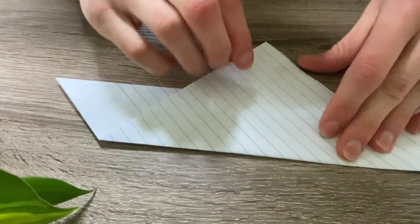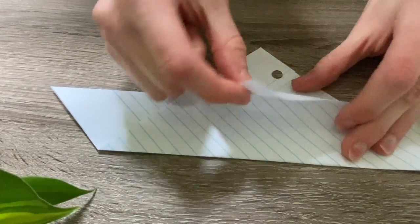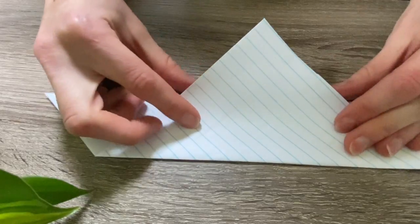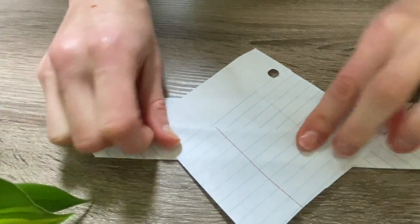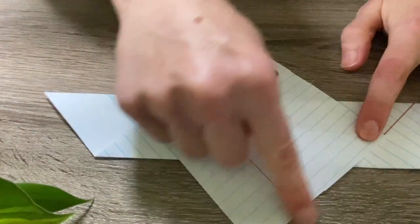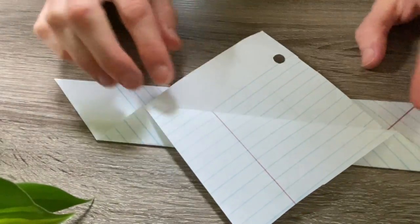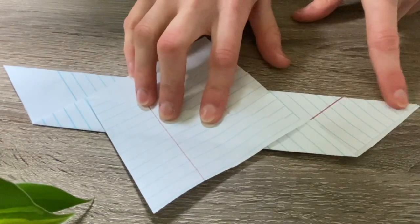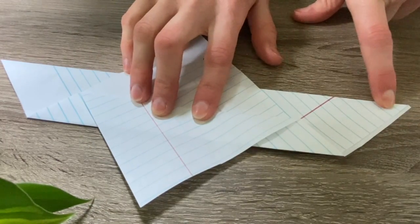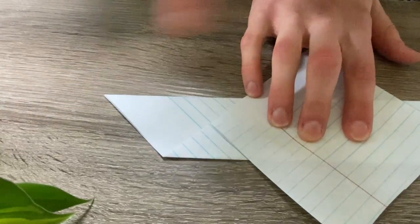The next thing we're going to do is take just this top flap here and fold that down about halfway so that we get this diamond shape in the center. Then we are going to take this point here, this tip of a wing, and fold it to meet this tip.